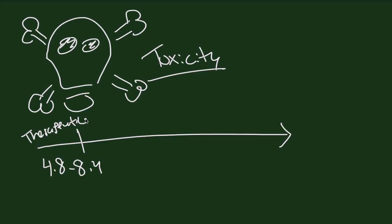If you look at the spectrum of magnesium in the bloodstream, the therapeutic range is defined as being between 4.8 to 8.4 milligrams per deciliter. This is the safe range of magnesium use.